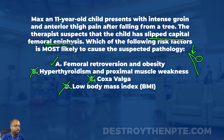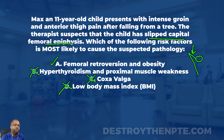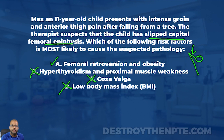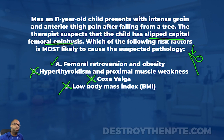Congratulations to those who got this correct — it's a tough one. Typically when you get questions about SCFE, you're comparing it to Legg-Calvé-Perthes or juvenile rheumatoid arthritis and trying to differentiate them. You need to understand the ins and outs of this condition and how it differs from the others, including risk factors and examination findings. I've made a cheat sheet that breaks down SCFE and Legg-Calvé-Perthes side by side so you can see the differences. If you're on the podcast, go to the show notes, click the link, and get that cheat sheet.